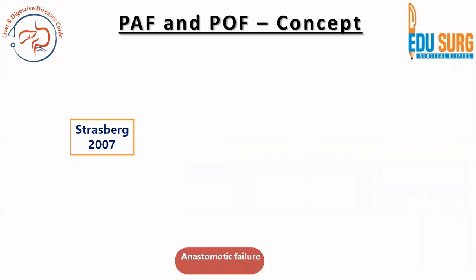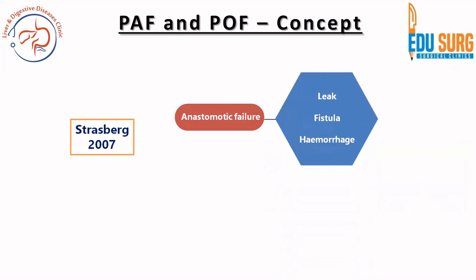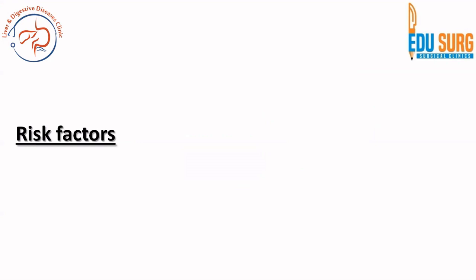Strasberg in 2007 introduced the concept of pancreatic anastomotic failure versus pancreatic occlusion failure, based on the difference in surgery. Pancreatic head resection is followed by an anastomosis, and failure of this anastomosis can result in a leak, fistula, or hemorrhage — this is pancreatic anastomotic failure. In contrast, distal pancreatectomy involves steps to occlude the duct; failure of these steps results in occlusion failure.